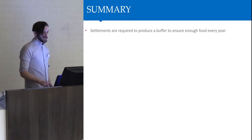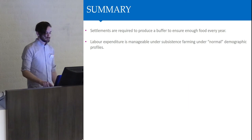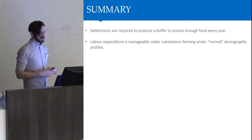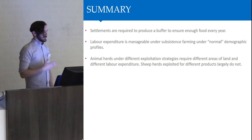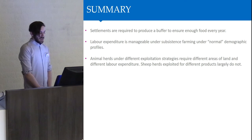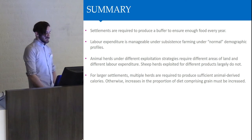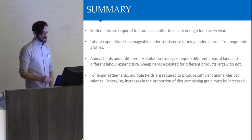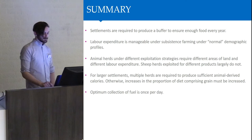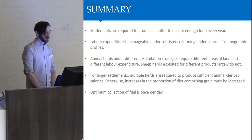So in summary, settlements are required to produce a buffer to ensure enough food every year. Labour expenditure is manageable under subsistence farming under normal demographic profiles. However, if members of the workforce are lost, then problems are encountered. Animal herds under different exploitation strategies require different areas of land and different labour expenditure. Sheep herds exploited for different products largely do not. For larger settlements, multiple herds are required to produce sufficient animal-derived calories. Otherwise, an increase in the proportion of diet comprising grain must be increased. And optimum collection of fuel is once per day.